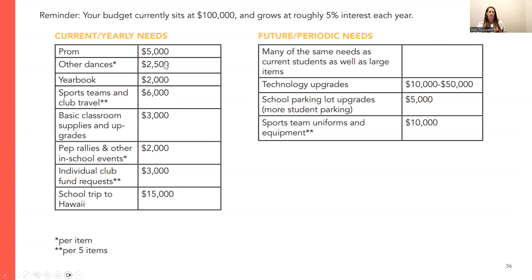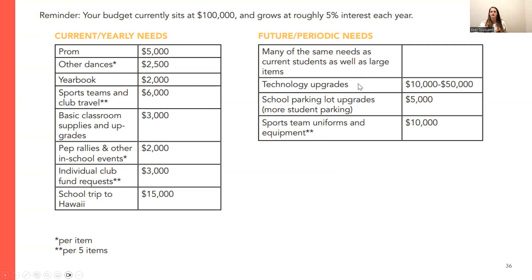Each dance is $2,500, so if they want a fall homecoming and a spring fling, that's $5,000. For clubs or sports teams, two asterisks means the price covers five items — so they get five sports. If they wanted five girls sports and five boys sports, that's $12,000 total. There are also things they might not need every year but want periodically, like technology upgrades, parking lot repairs, or sports team uniforms.